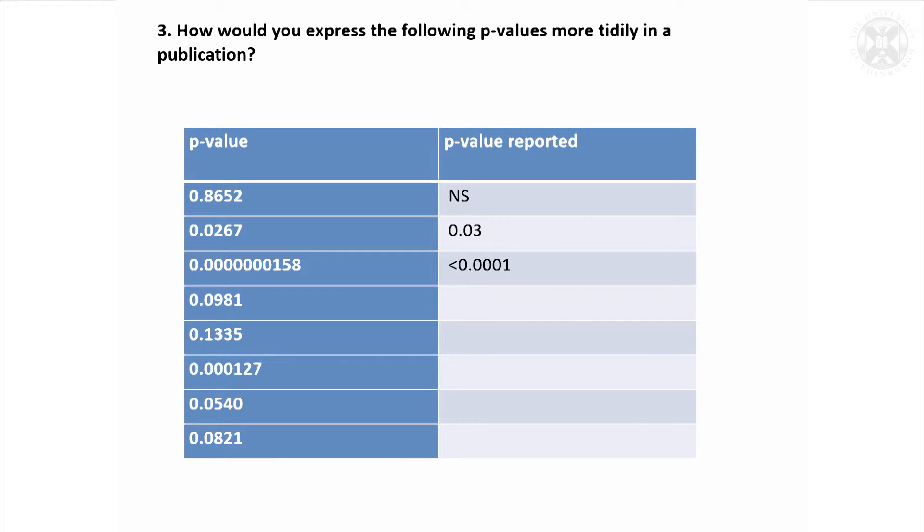Next one, you can either put not significant, or sometimes if they're a bit borderline, put the actual p-value but always rounded a bit. This one, yep. And the next one, in this case I tend to put the rounded value and put the exact value. But you could alternatively—well actually, you could say it was less than 0.001, but it's probably better to do this.